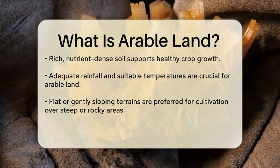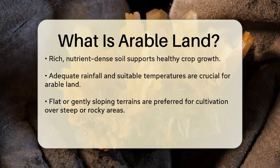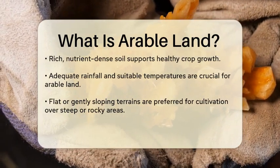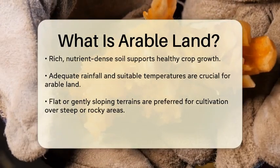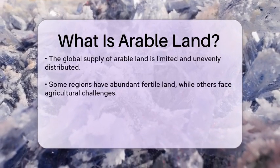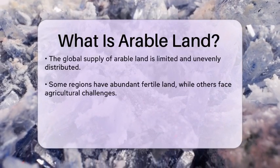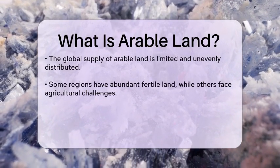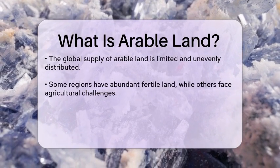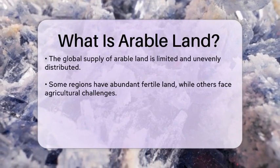The soil in arable land is often rich in nutrients, allowing for healthy crop growth. Additionally, the climate plays a significant role — regions with adequate rainfall and appropriate temperatures are more likely to have arable land. Topography, or the physical features of the land, also matters. Flat or gently sloping areas are generally easier to cultivate than steep or rocky terrains.